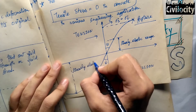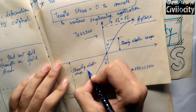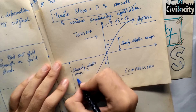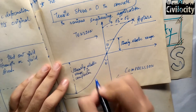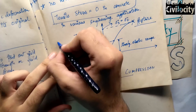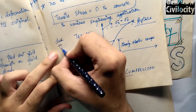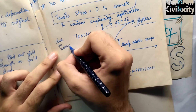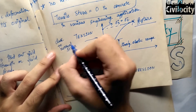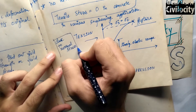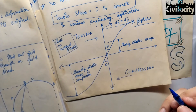For brittle materials in compression, the ultimate strength in compression is much larger than the ultimate strength in tension. The linear elastic range in compression is larger compared to that in tension, and the modulus of elasticity is the same in tension as in compression. And this covers the stress-strain curve of brittle materials in tension and compression.